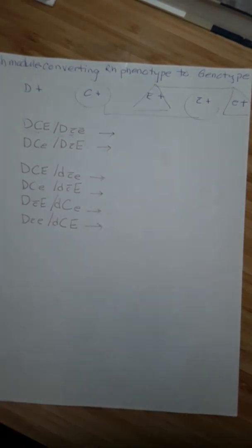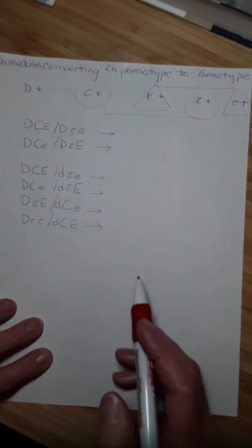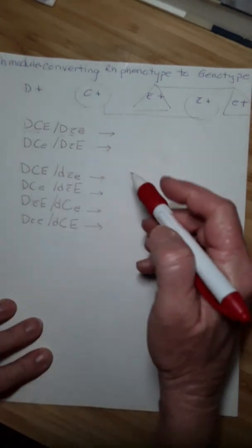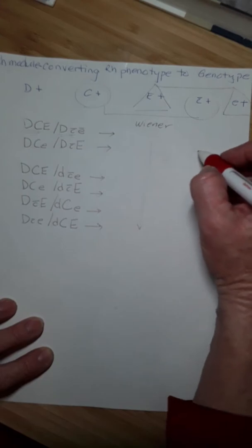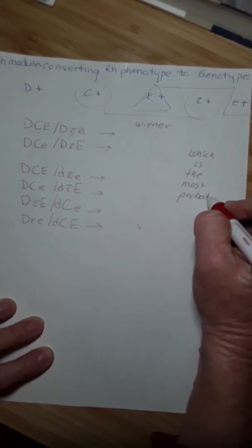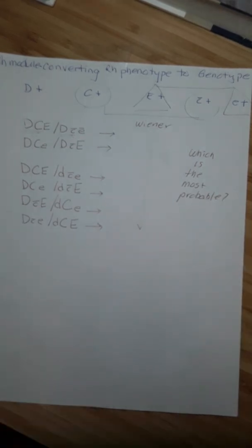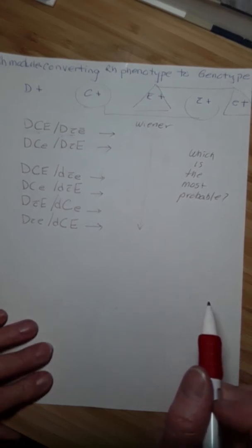Now it's my job to determine which of these is the most probable genotype. They're all possible genotypes. In order to do that, I typically convert them into Weiner terminology because I find it easier to think in Weiner. Once you've got your choices, convert them to Weiner, write those choices down, and then decide which is the most probable. To do that, you can use the frequencies that are found on page 11 of the RH module. Some of these you may not be able to find on page 11, and that's probably because they're present in a very low percentage of the population.